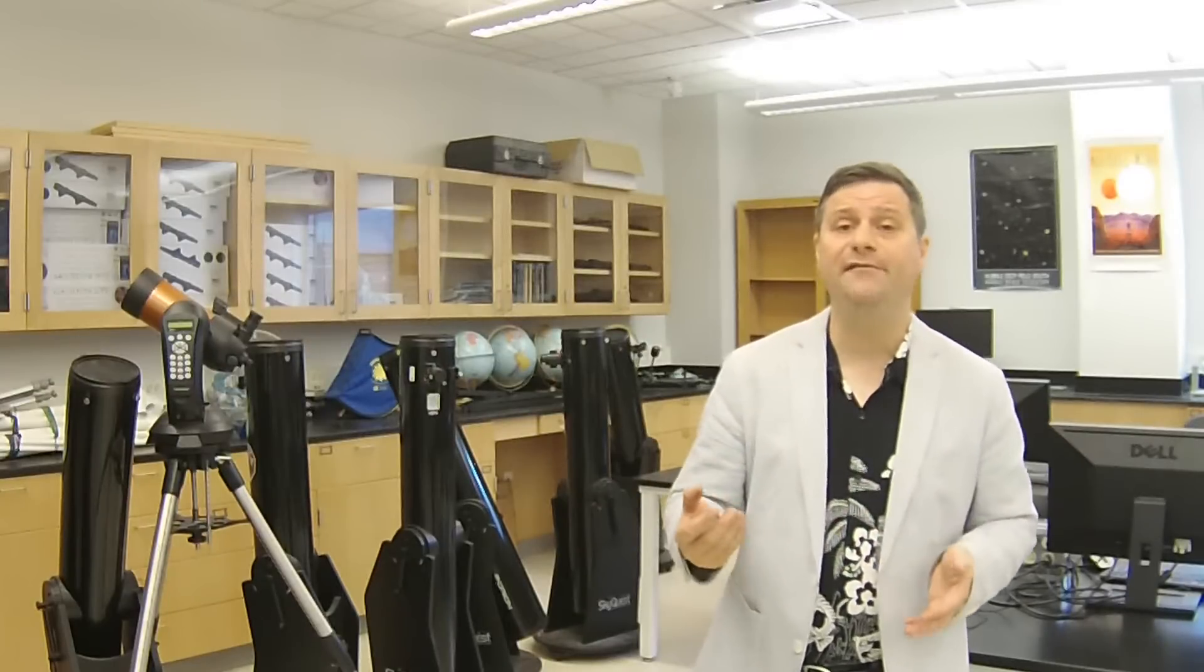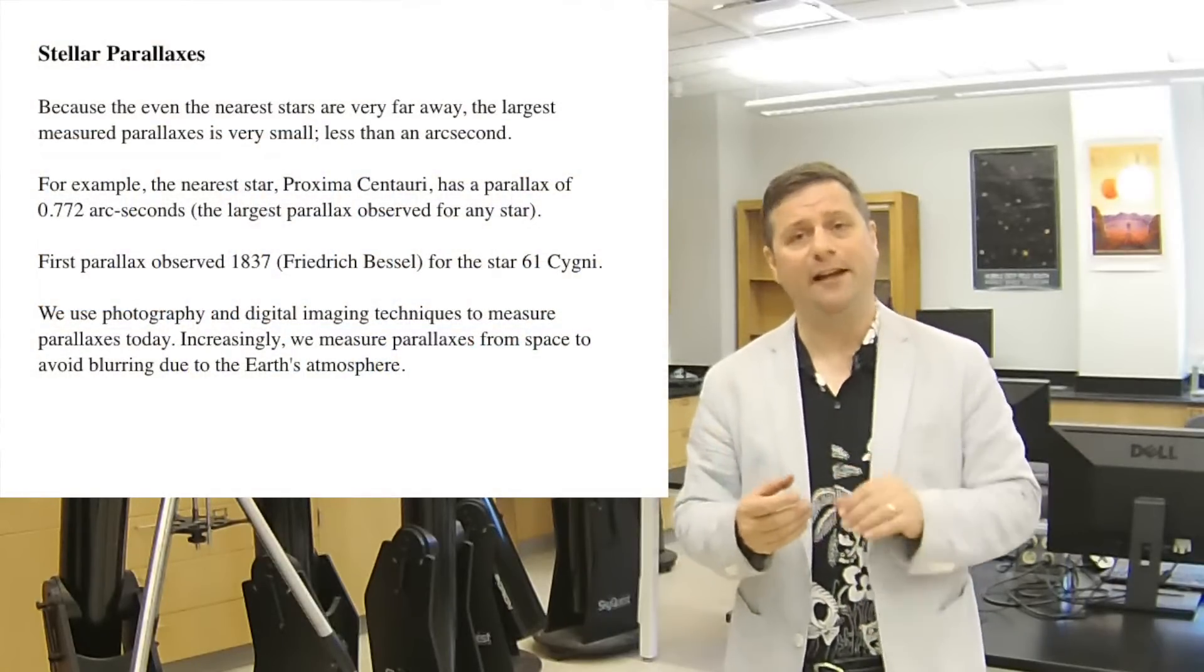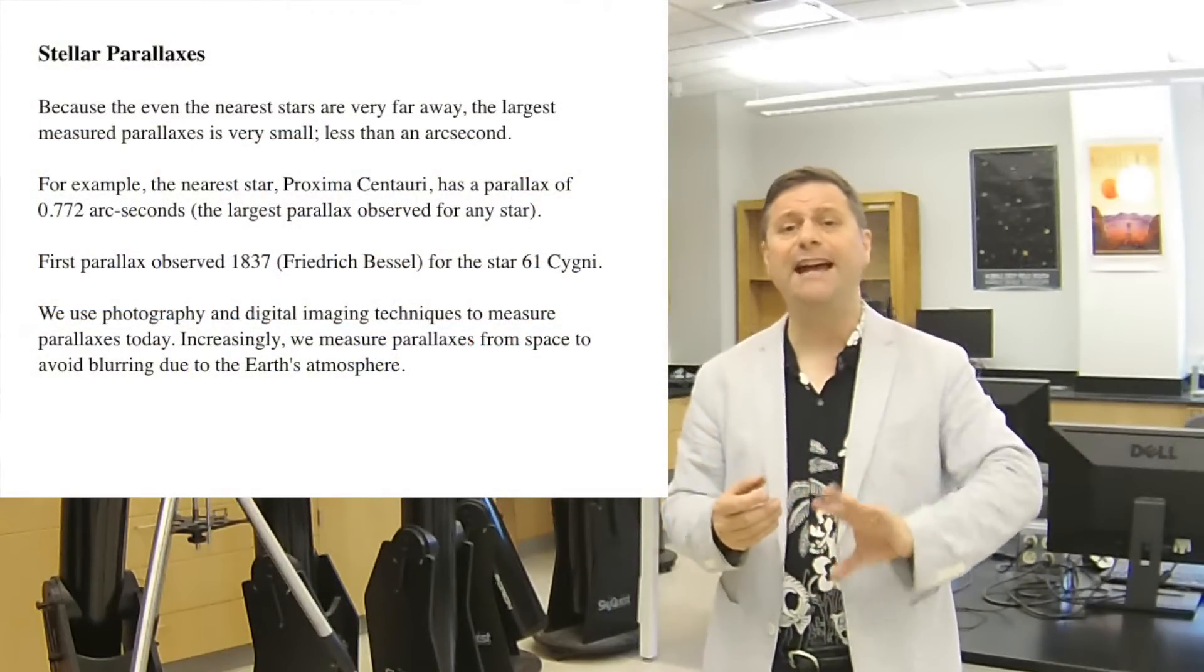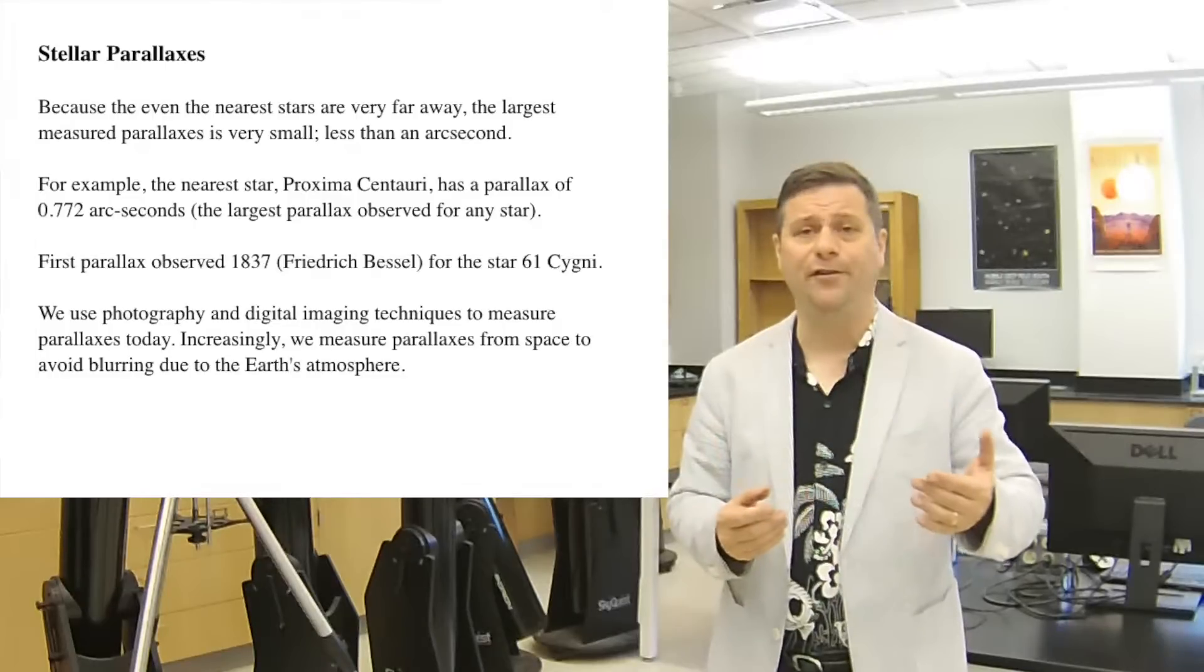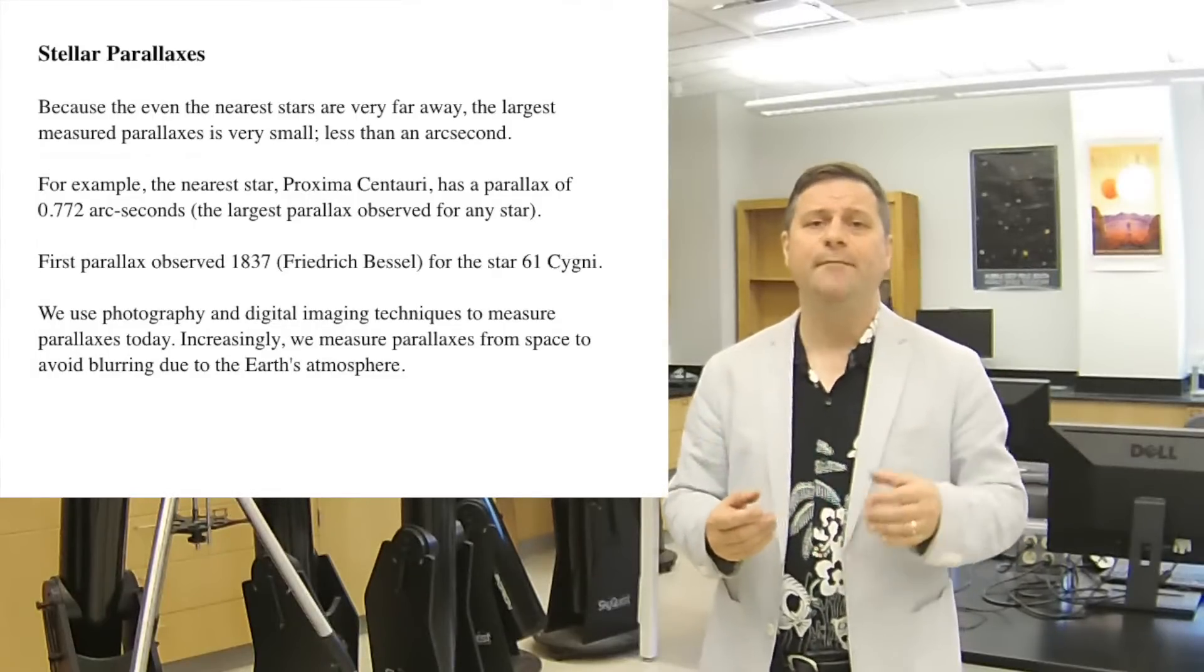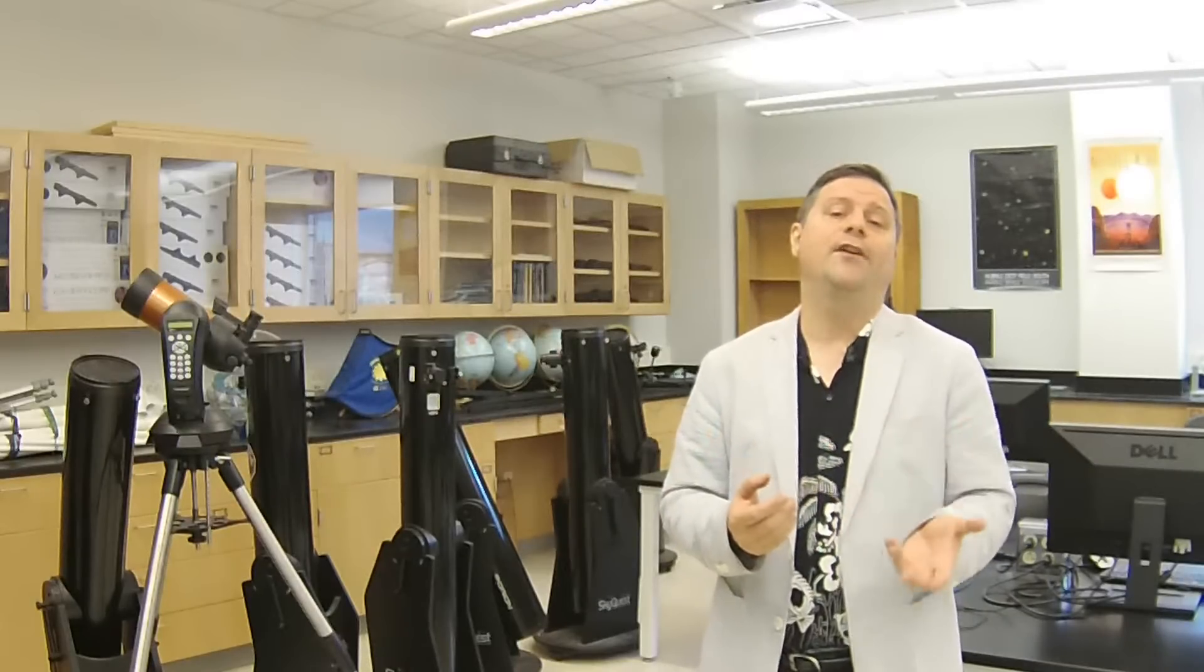What kind of parallaxes do we see for stars? In fact, no star that we see in the sky has a parallax shift that is greater than an arc second. Every star has a parallax shift less than an arc second. The biggest parallax shift is for Proxima Centauri, which is about three-quarters of an arc second, 0.77 arc seconds to be specific, and that makes it have a distance of approximately 1.3 parsecs.